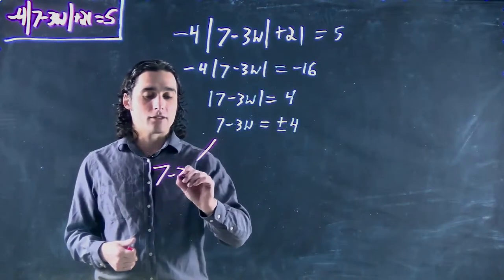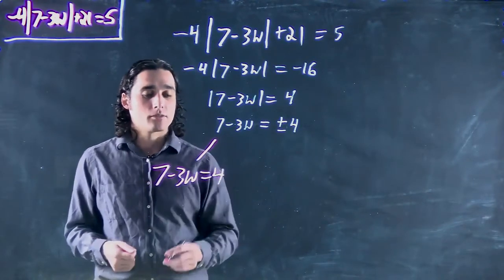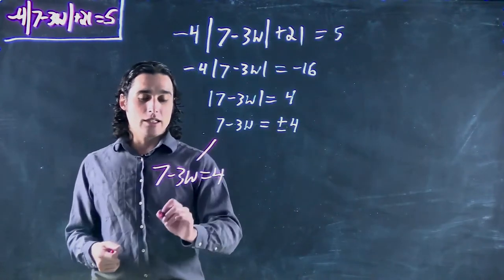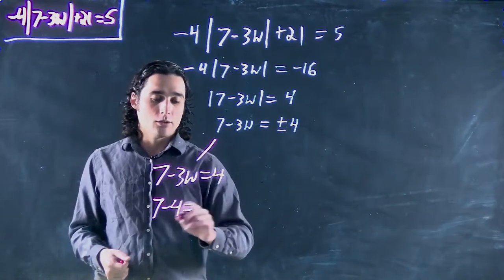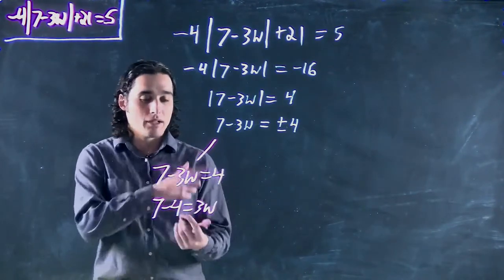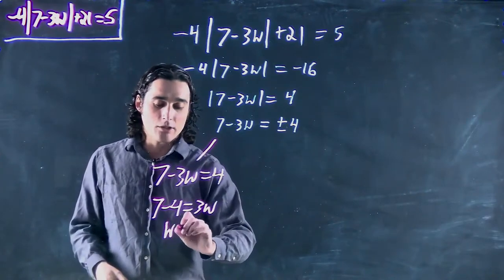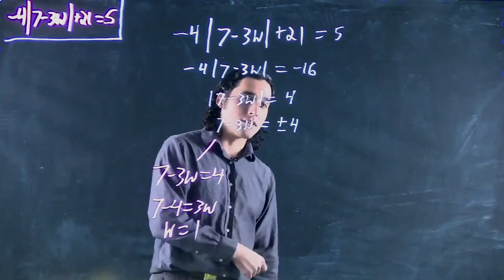So first, 7 - 3w equals 4. Let's go to the positive case first. We can bring the 3w over and say 7 - 4 equals 3w. And we can flip it and say w equals 1, because 7 - 4 is 3 divided by 3 is 1.